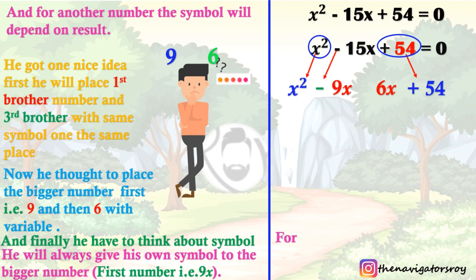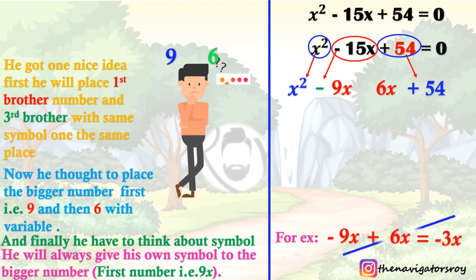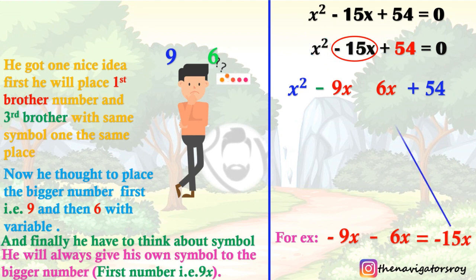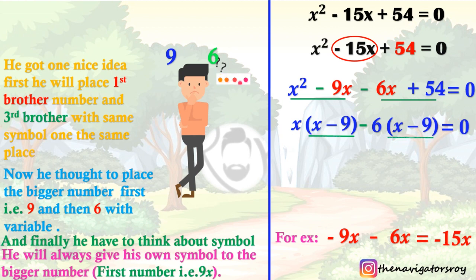If we have minus 6 and minus 9, then minus 6 plus minus 9 is minus 15. So we decide: okay, I will put minus here so that minus 15 will be minus 15. Now to solve, we take common factors. You can see that x squared minus 9x has x in common, giving x minus 9. Then for the remaining terms, taking common factor gives x minus 6.